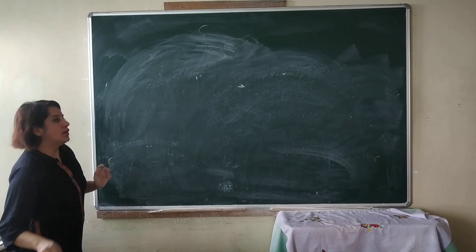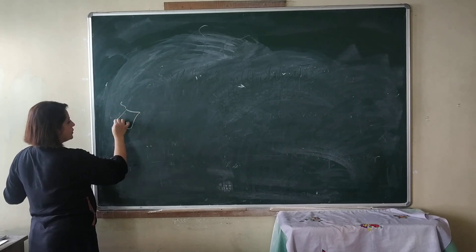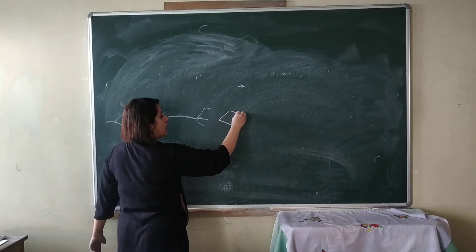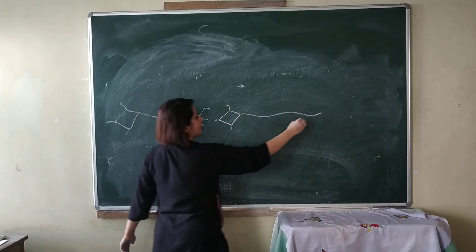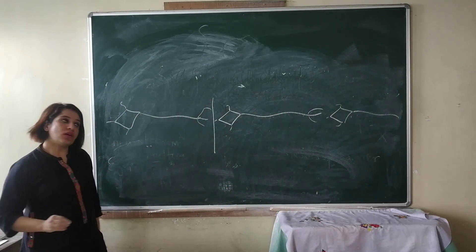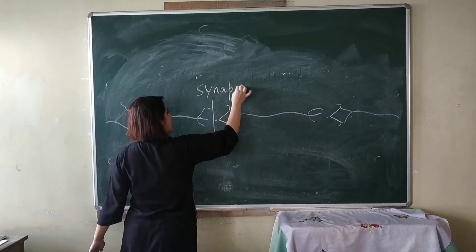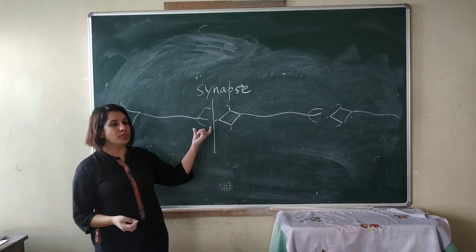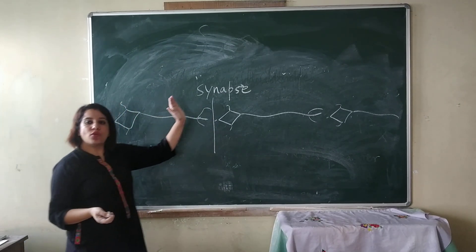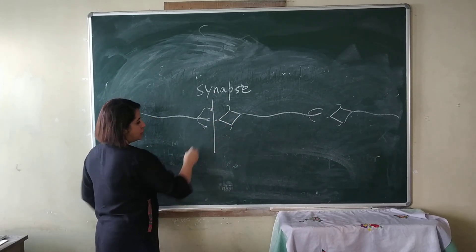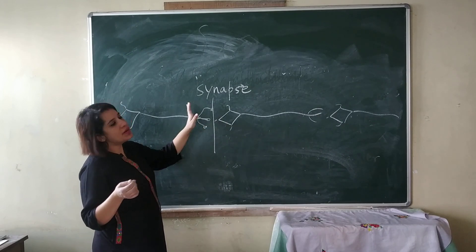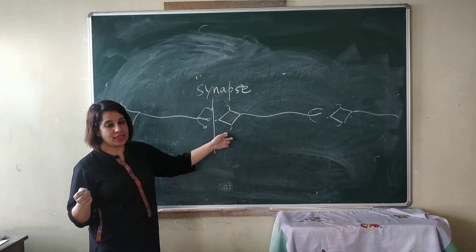Neurons are not attached to each other. Suppose this is one neuron — there is a small gap, and then there is the other neuron. Similarly, small gap and then the other neuron. These gaps are called synapses. A synapse is the junction or the gap between two neurons. It is here from where impulse is transmitted from one neuron to another through the neurotransmitters present in the axon endings. The dendrites or dendrons collect the information.